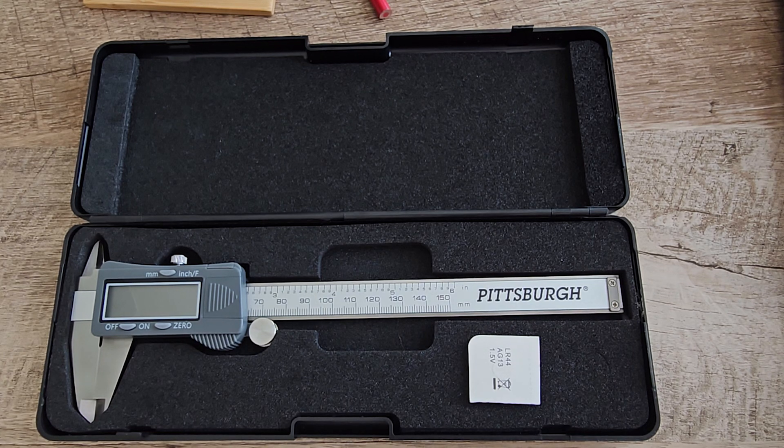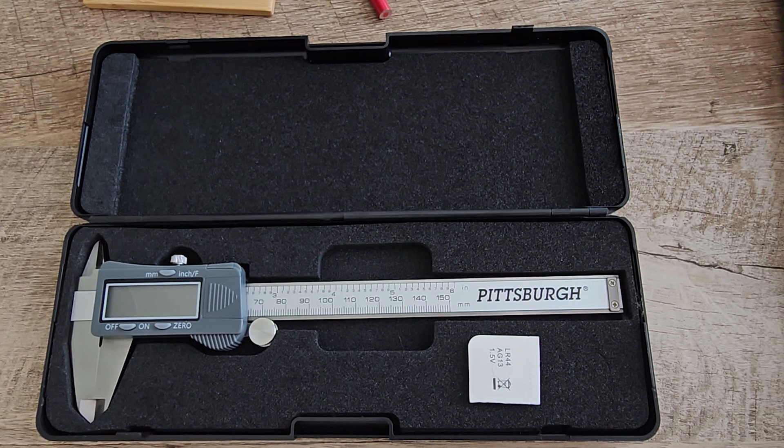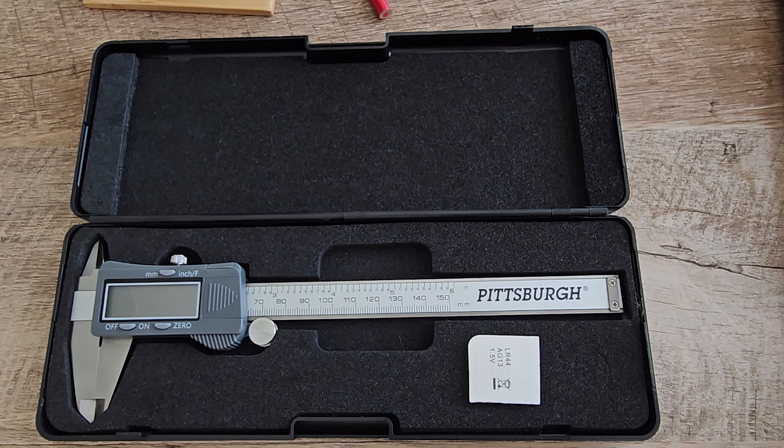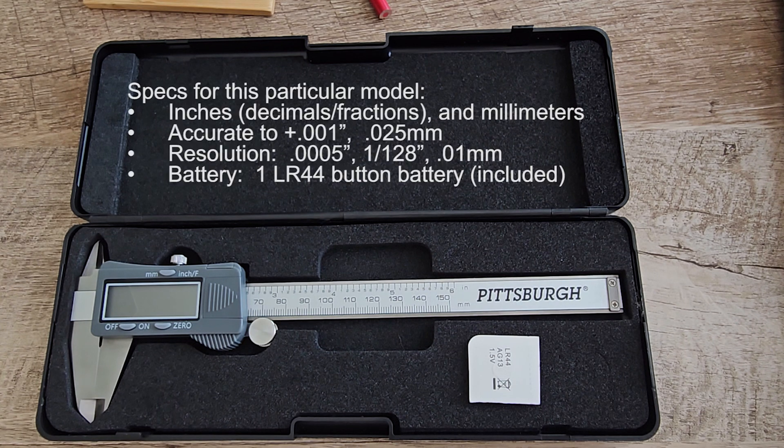This is going to be a quick overview on how to use a digital caliper. This is a Pittsburgh 6-inch digital caliper, item 62569, but they all should be very similar. This was purchased from Harbor Freight for about $23.